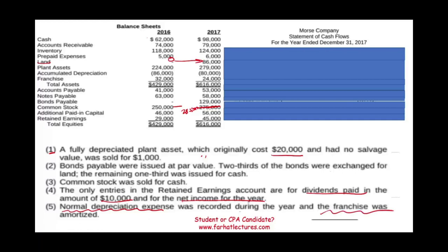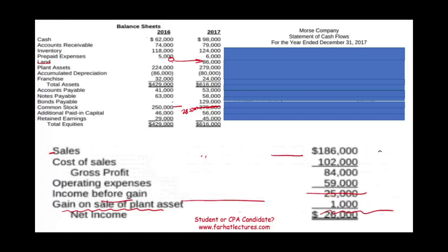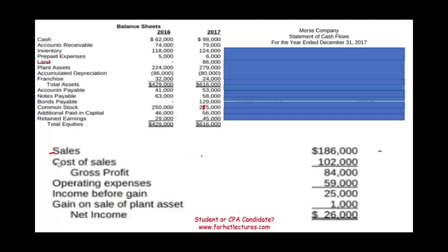We are asked to prepare the statement of cash flows using the indirect method. How do we prepare it? We start with net income, because the purpose is to start with net income and work through all the adjustments. What adjustments do we make? We want to find out if we have any non-cash expenses and add them back.